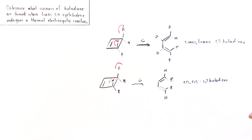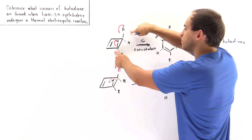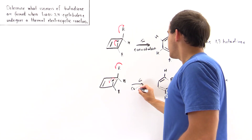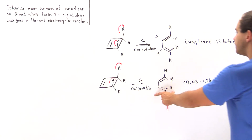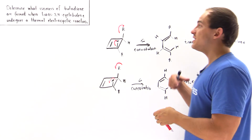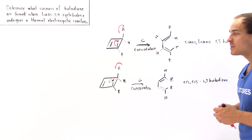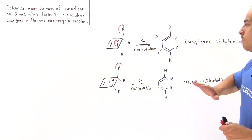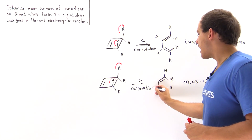So this is one type of conrotation — let's say clockwise — and in the other conrotation they rotate in the same direction but counterclockwise. We form cis-cis in the counterclockwise case and trans-trans in the clockwise case. Remember, we cannot have disrotation in thermal electrocyclic reactions. If disrotation took place, we would form cis-trans and trans-cis. But because only conrotation takes place, we can only form trans-trans or cis-cis.